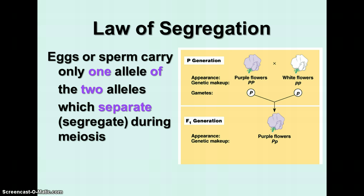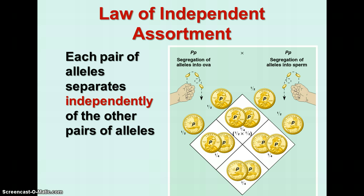The law of segregation: each egg or sperm carries only one allele of the two. Two parents each have two alleles, and they pass on only one allele to the offspring. The alleles separate from each other during meiosis, and the offspring ends up with one from each parent. The law of independent assortment means each allele pair separates independently of the other allele pairs — it doesn't matter how many times you flip the coin; each time you flip it, you have a 50-50 chance of heads or tails, and it doesn't depend on what happened before. They're independent of each other.